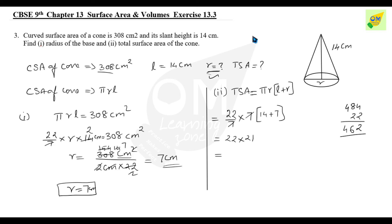Now 22 into 21 — what is that? 462. So the total surface area of the cone is 462 cm². A centimeter into centimeter is a centimeter square. This is the answer.